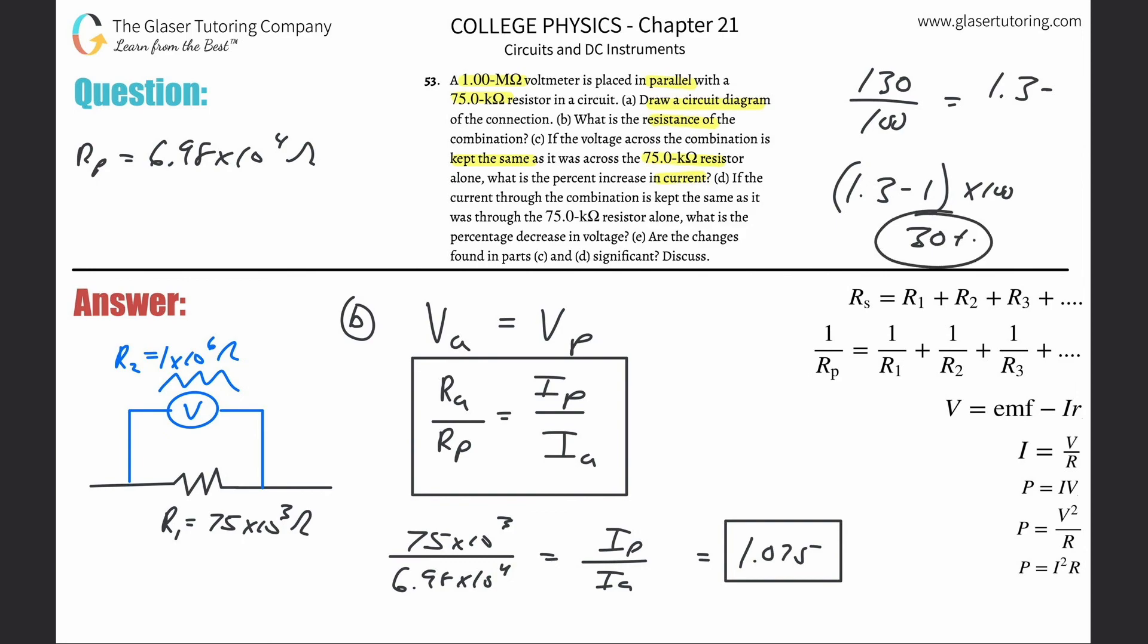You can always use that technique whenever you're talking about fractional changes. So if I know 1.075 represents the fractional change, all I need to do then in order to find the percent change now is simply subtract one from it and multiply it by 100. And you'll notice 7.5% gets spit out. So that's the answer.